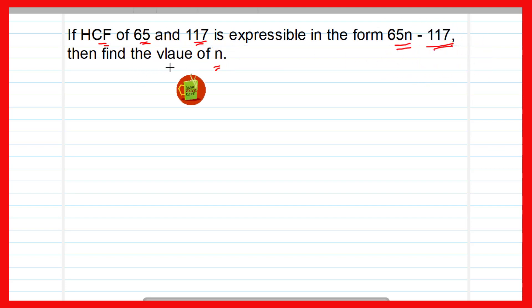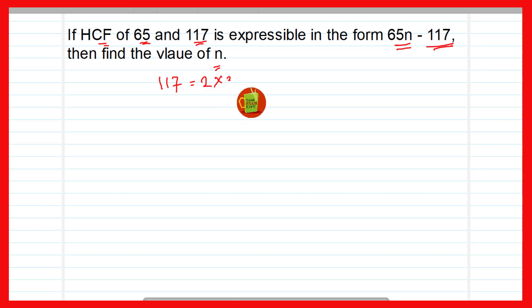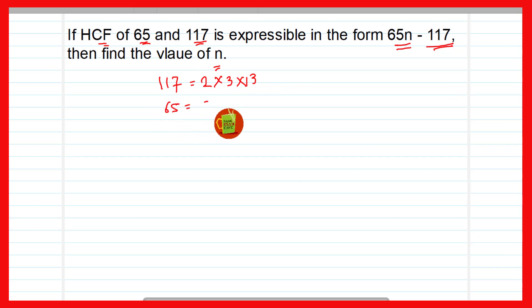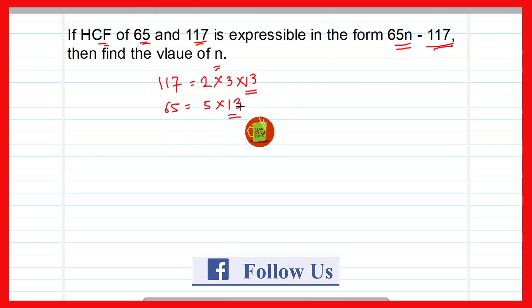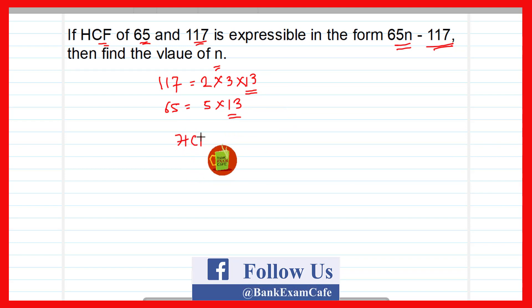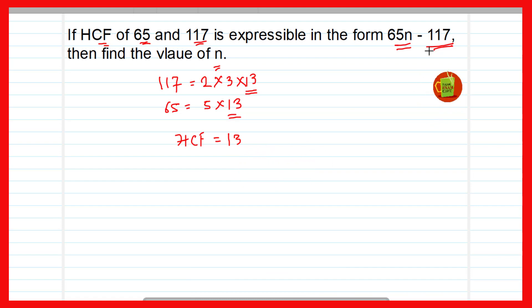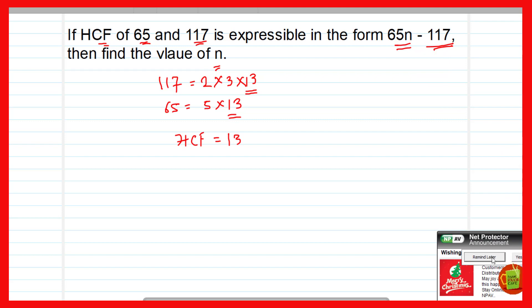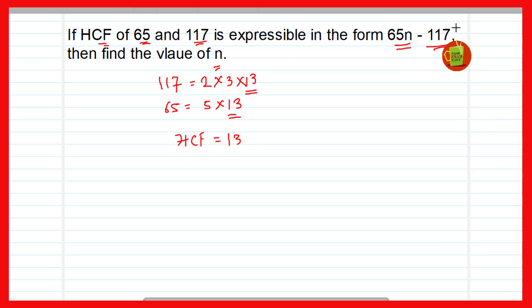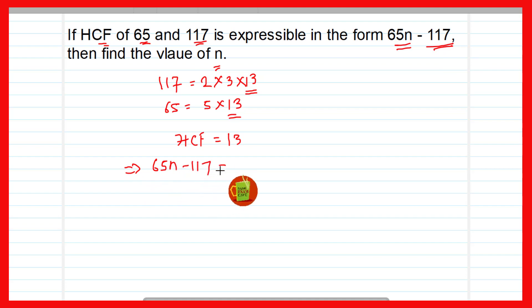117 can be factorized as 2 × 3 × 13 + wait — 117 can be factorized as 3 × 3 × 13, and 65 can be factorized as 5 × 13. Here you see that 13 is the common number in both 117 and 65, and therefore 13 will be the HCF. So HCF is equal to 13. But the HCF is given in the form of n as 65n minus 117.